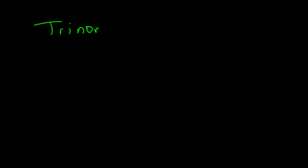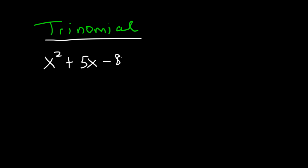A trinomial has three terms. Tri means three. An example of a trinomial would be x squared plus 5x minus 8. Another example: x cubed plus 6x minus 7. They all have three terms. A polynomial is an expression that simply has many terms — poly means many.